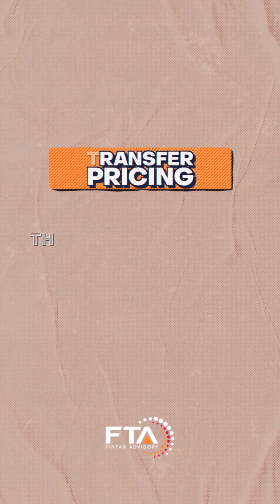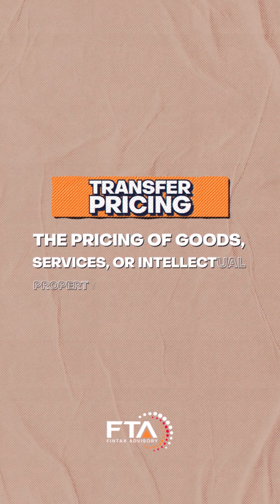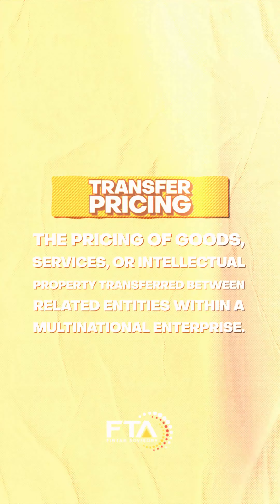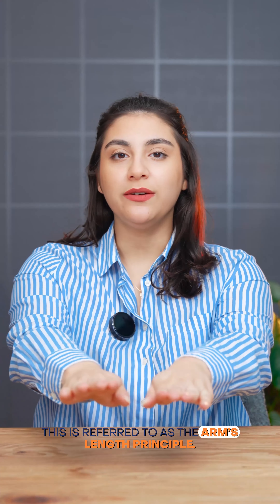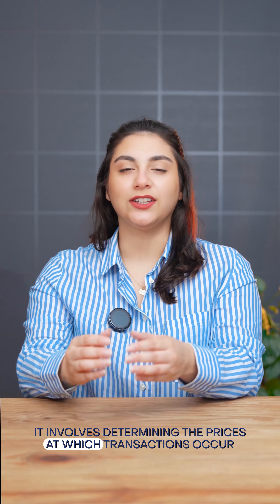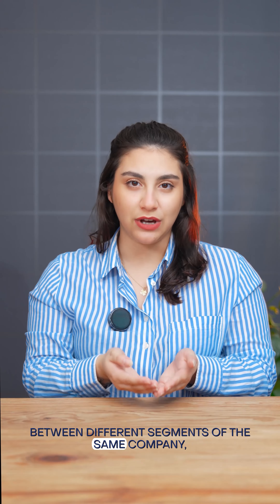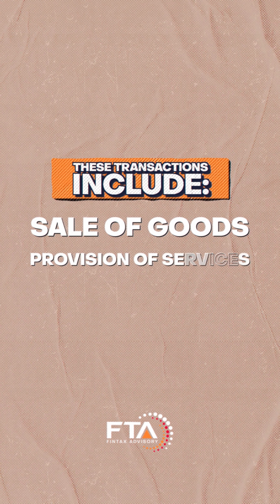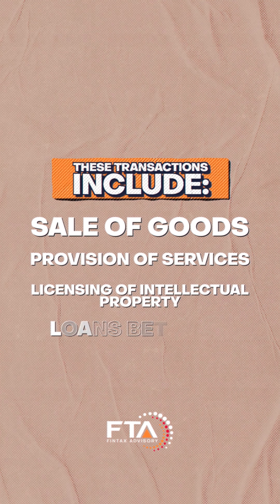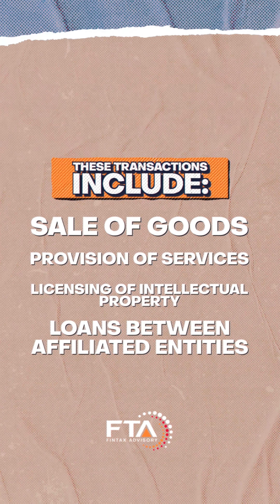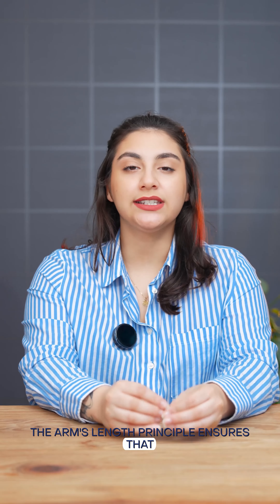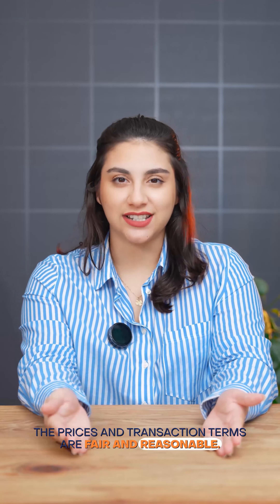Transfer pricing refers to the pricing of goods, services, or intellectual property transferred between related entities within a multinational enterprise. This is referred to as the arm's length principle. It involves determining the prices at which transactions occur between different segments of the same company, often across international borders. These transactions can include the sale of goods, provision of services, licensing of intellectual property, or loans between affiliated entities. The arm's length principle ensures that prices and transaction terms are fair and reasonable.